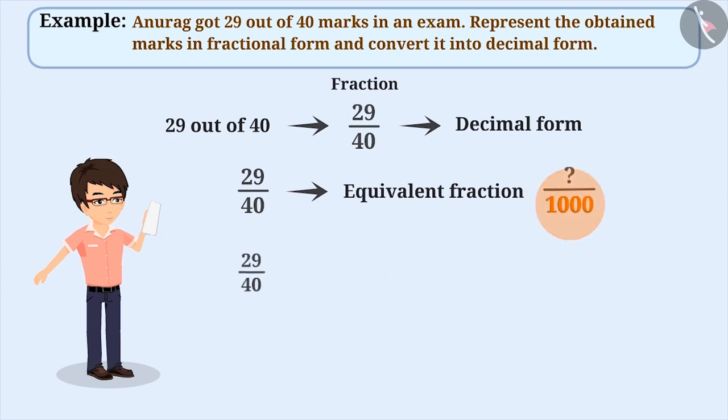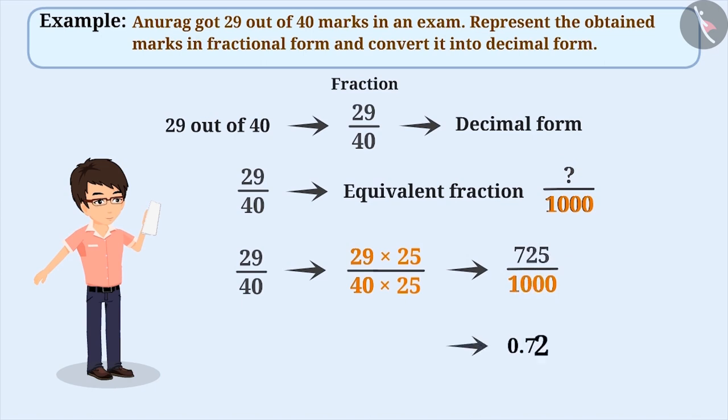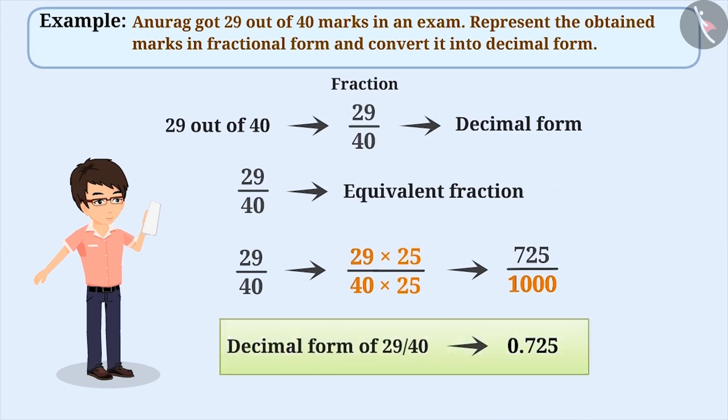But if we multiply the numerator 29 and the denominator 40 of 29 by 40 with 25, then we can get an equivalent fraction of 29 by 40 as 725 by 1000 whose denominator is 1000. Now, we can write 725 by 1000 as 0.725. This is the decimal form of 29 by 40.